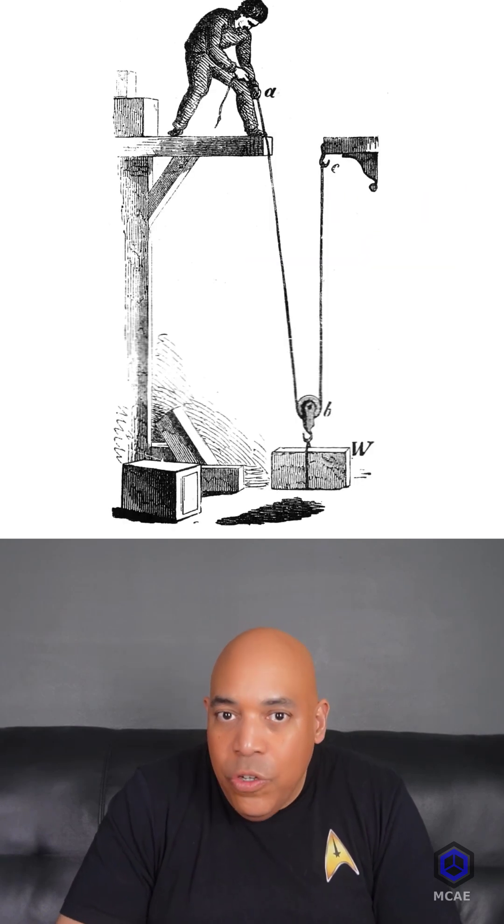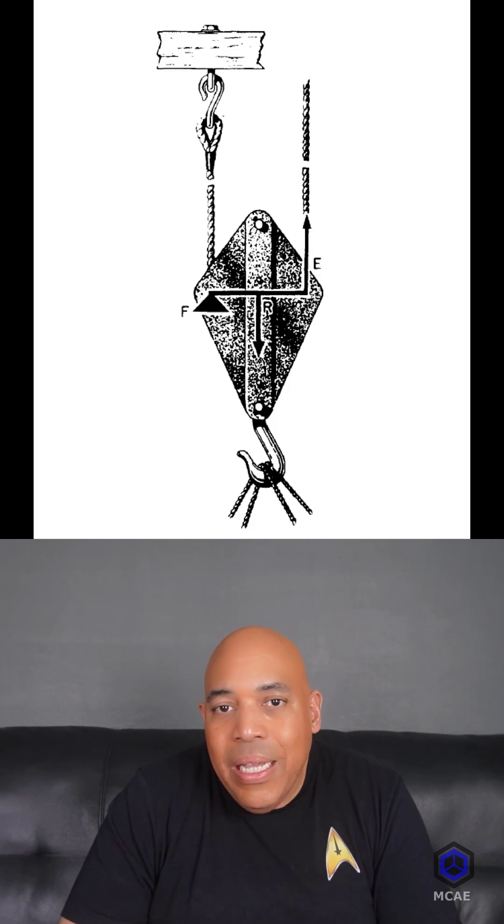In a movable pulley, the wheel is attached to the load and therefore moves with it. It has a mechanical advantage of two.